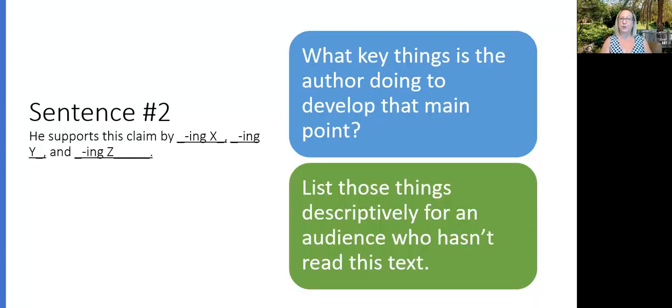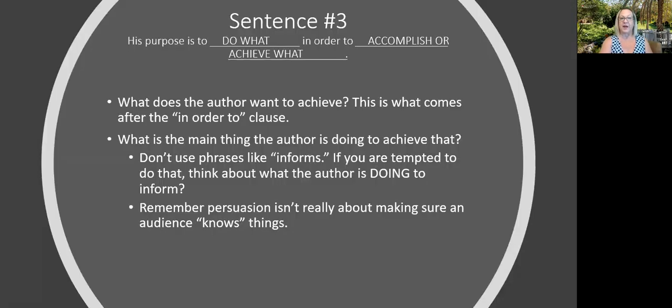Sentence two. This is a list of three things, maybe two, maybe four, that describe the most important things involved in developing that argument. The one that you stated in the previous sentence. List those things descriptively for an audience who hasn't read the text. Again, authors do a lot of things. But you want to show how the author builds the argument, and so you've got to identify the most essential things that the author is doing to build that argument.